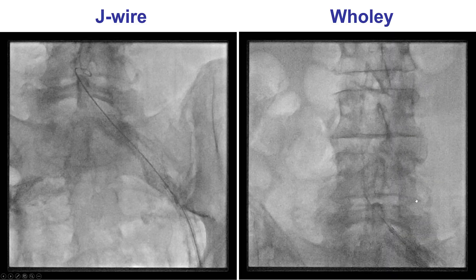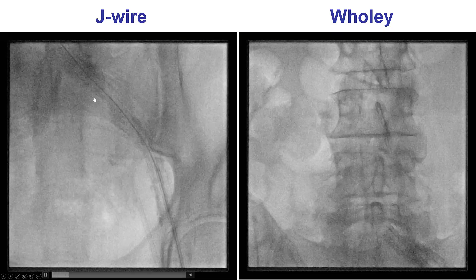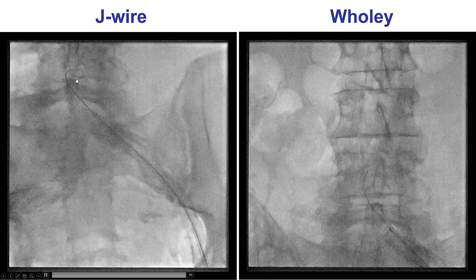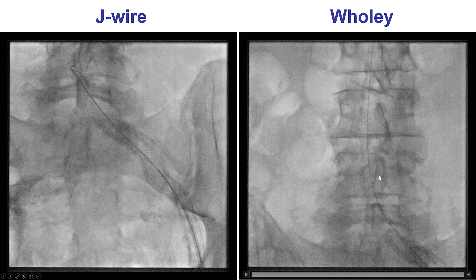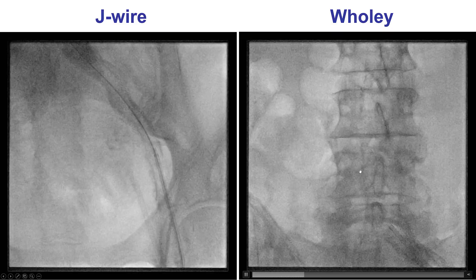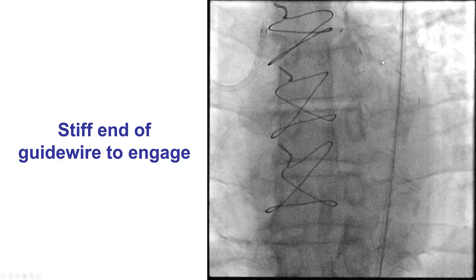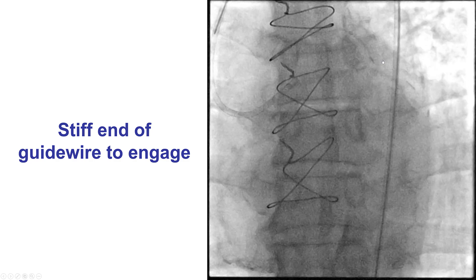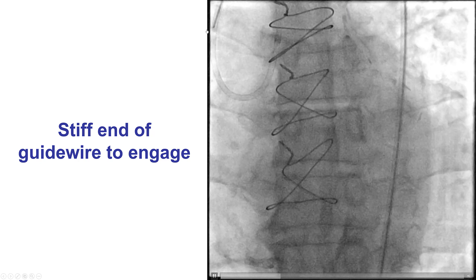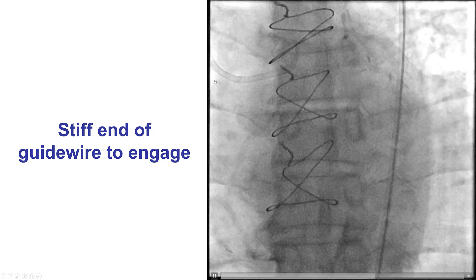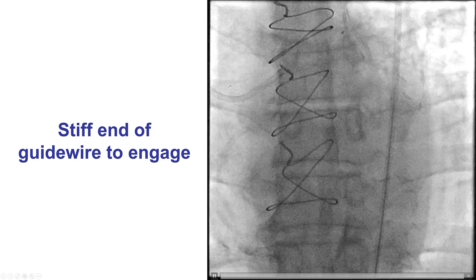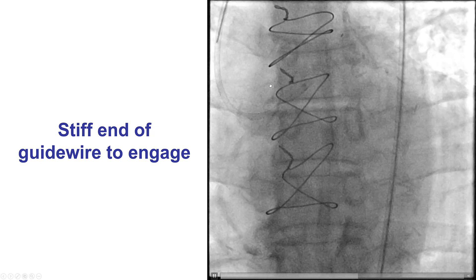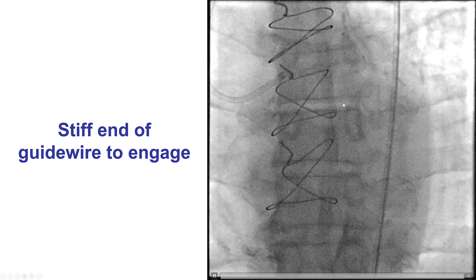We then had significant difficulty getting past the distal aorta, likely due to significant disease and calcium. So we used the Wholey wire, which has a very soft tip, and that went up into the aorta. Engaging was also challenging. However, we were finally able to advance the back end of the stiff Kite wire to straighten out the EBU guide, and then the guide was able to engage the left main.